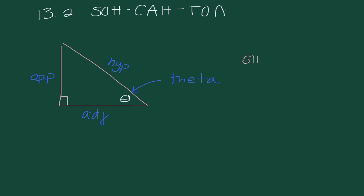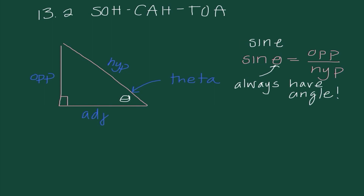So how SOHCAHTOA fits into this: SOH stands for sine of theta equals opposite over hypotenuse. The ratio of opposite over hypotenuse is always going to be a constant value for a specific angle. Sine is actually spelled S-I-N-E. I really want to point out that we always need to have an angle after our trig function — it is impossible to find a ratio without an angle. I should never see sine, cosine, tangent, or any trig function by itself; they should always be followed with an angle. That takes care of the SOH part.